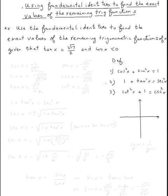The topic is using fundamental identities to find the exact values of the remaining trig functions. Use the fundamental identities to find the exact values of the remaining trig functions of x, given that tangent is equal to square root of seventeen over two, and cosine of x is less than zero.